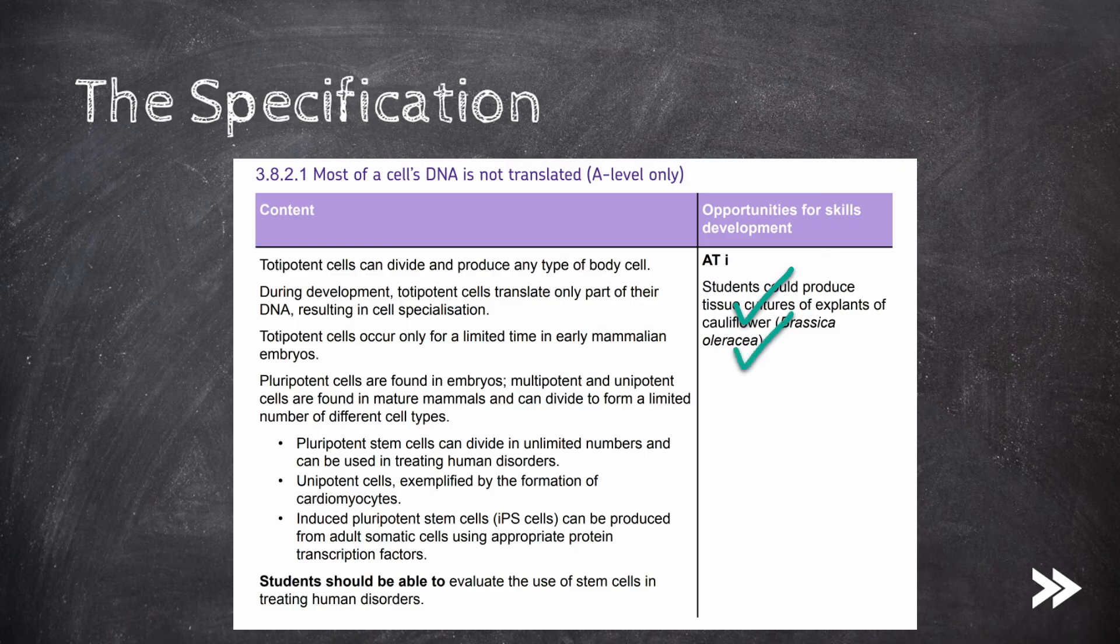We have covered pluripotent cells, as well as multipotent and unipotent cells. We have covered how pluripotent stem cells can divide in unlimited numbers and can be used in treating human disorders. We have also covered unipotent cells, exemplified by the formation of cardiomyocytes. And finally, we have covered iPS cells.